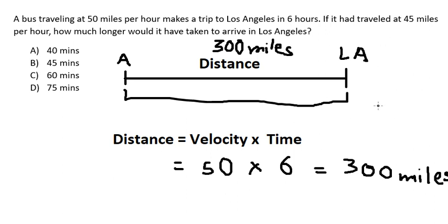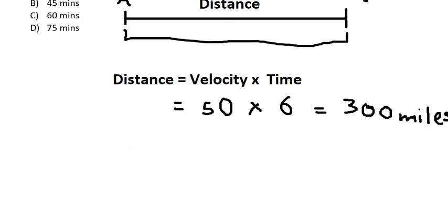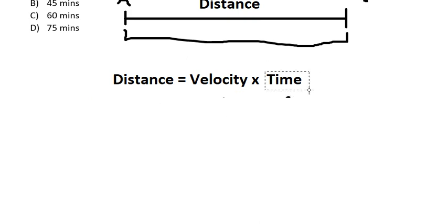Now they change the velocity to 45 miles per hour. We can use this formula, but we need to find the time. To find the time, we need to divide both sides by velocity.